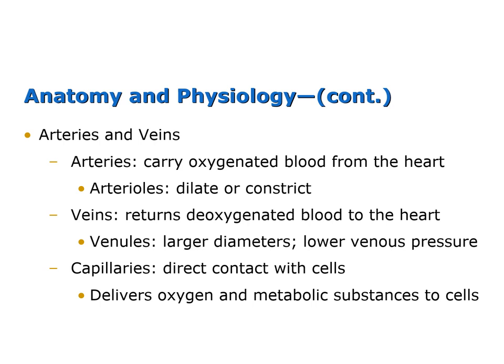A few smaller vessels include the arterioles, the venules, and the capillaries. The capillaries help deliver oxygen and metabolic substances to the cells. This is where the exchange of fluids, nutrients, and metabolic wastes occurs, because the capillaries are thin and very permeable — meaning things can easily be transported across them. They are connected to the arteries and veins through those smaller vessels called arterioles and venules.